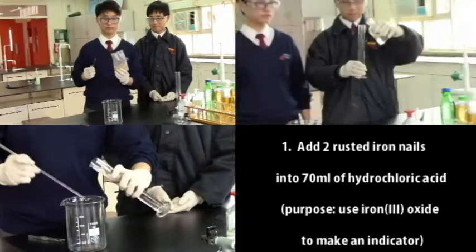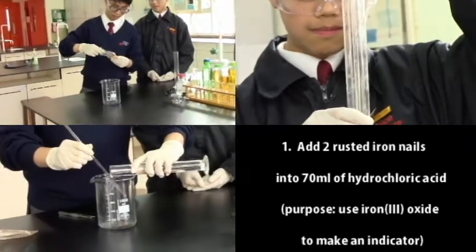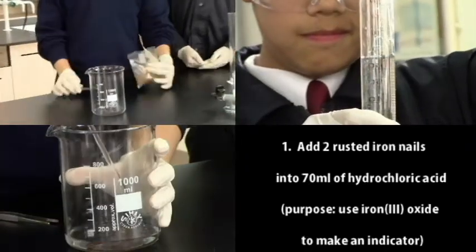First, put two rusted iron nails into 70 milliliters of 2 molar hydrochloric acid. Stir and allow it to stand for 10 minutes.